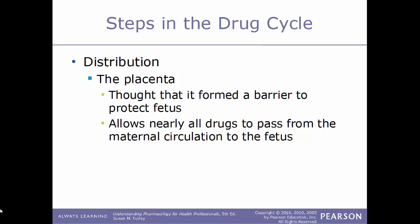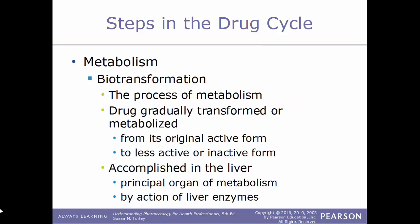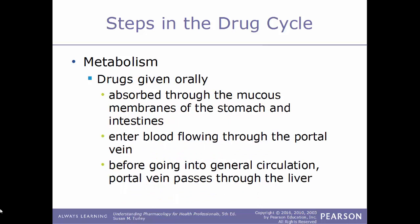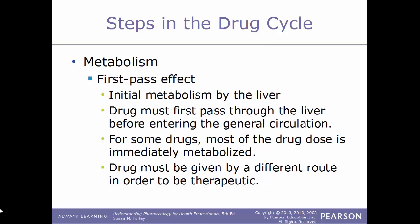The placenta was thought to form a protective barrier for the developing fetus, but it actually allows nearly all drugs to pass from the mother's blood supply into the fetus. Whatever drug the mother takes, the baby will be exposed to, whether over the counter or prescription. After distribution, drugs are metabolized — also known as biotransformation — gradually transforming from their original active form to a less active or inactive form. This takes place primarily in the liver via liver enzymes. Drugs given orally are absorbed through the stomach and intestinal mucous membranes, with blood entering the liver through the portal vein before completing circulation.